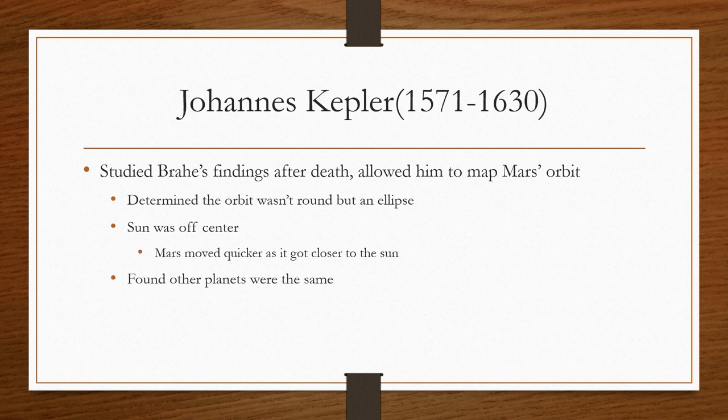When Brahe died, his work passed on to Kepler. But Kepler and Tycho did not always get along. Kepler actually got fired multiple times, but he would always come back because Brahe needed him. When Brahe passed on, Kepler studied his findings and was able to map Mars' orbit. He found it wasn't circular, but an ellipse. He also found the sun was not at the center of this elliptical orbit, but off-center.